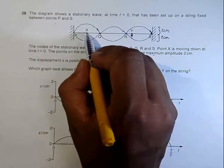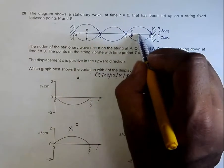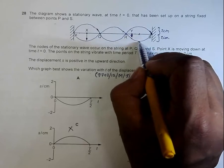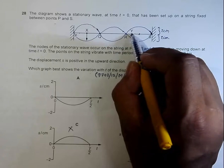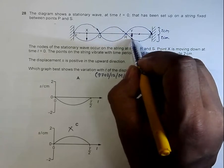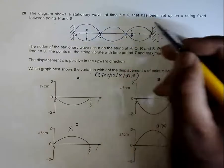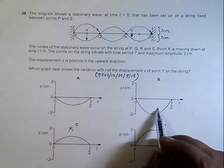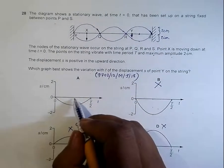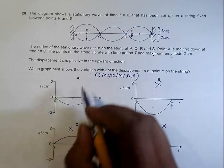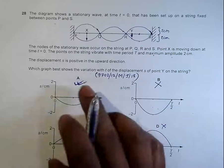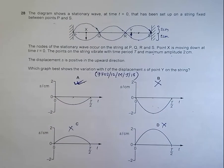Now, if it were point x or a point at maximum amplitude, it could reach the full 2 cm. But point y cannot reach 2 cm — it should be somewhere around half. Comparing the two remaining graphs: one has amplitude reaching 2 cm, and the other reaches somewhere around negative 1 cm — about half. So the correct choice is graph A, which shows the displacement going negative with a smaller amplitude. Choice A is the correct answer to this question.